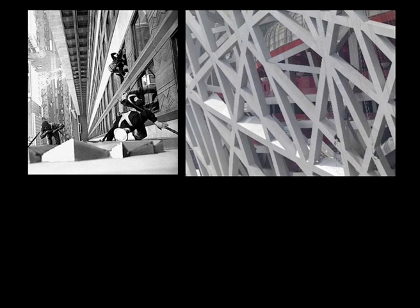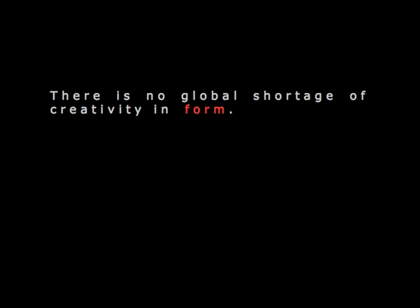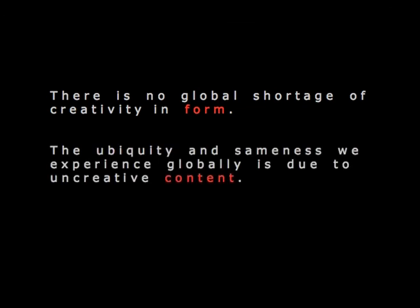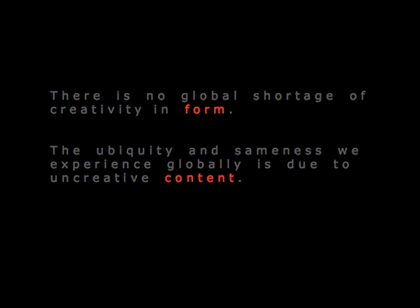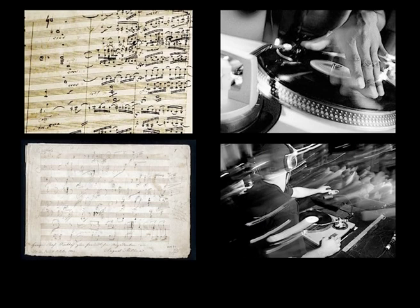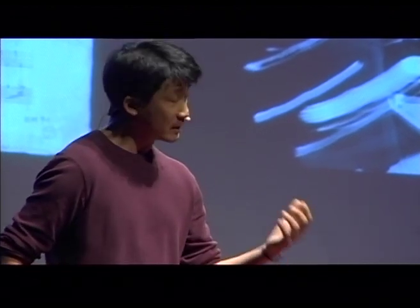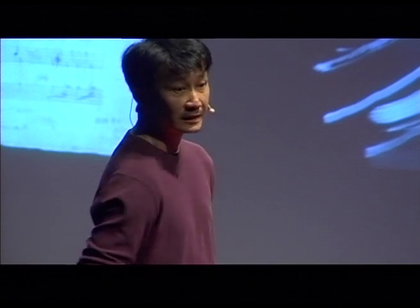That's the Empire State Building in 1932 and the Bird's Nest a few years ago. But it isn't really about migrant labor or cleaning buildings. The whole issue is that there's no global shortage of creativity in form. The ubiquity and sameness we experience globally is due to uncreative content. So we're back to form and content, and it's this interchangeability of these dual concepts that has led us to this path. We have made a categorical mistake — a lot of times we think we're talking about content, but actually we're referring to form.